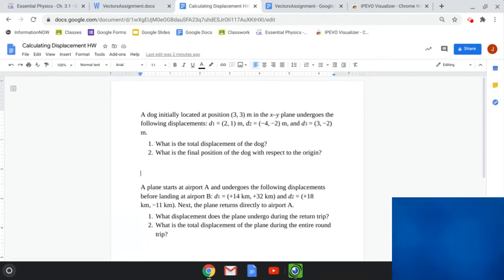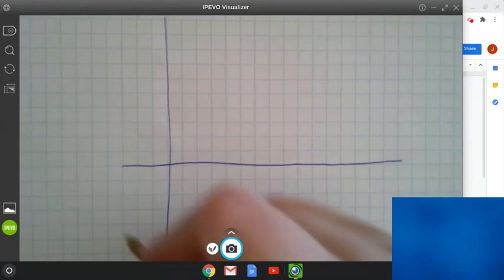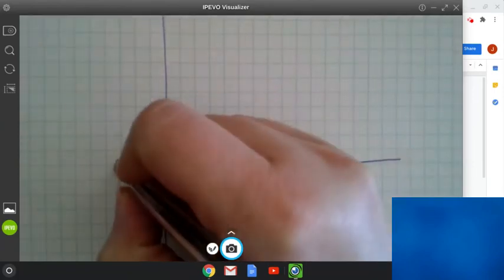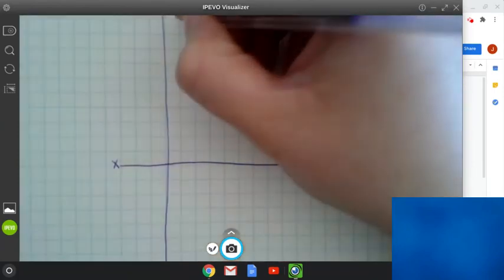So number one, a dog initially located at position 3-3 meters in the XY plane undergoes the following displacement. What is the total displacement of the dog and what is the final position of the dog with respect to the origin? What I'm going to do is I'm going to draw a diagram to show you the movement of the dog. So here's my graph that I'm going to use. Again, you guys know this, but this is my X axis and here's my Y axis.